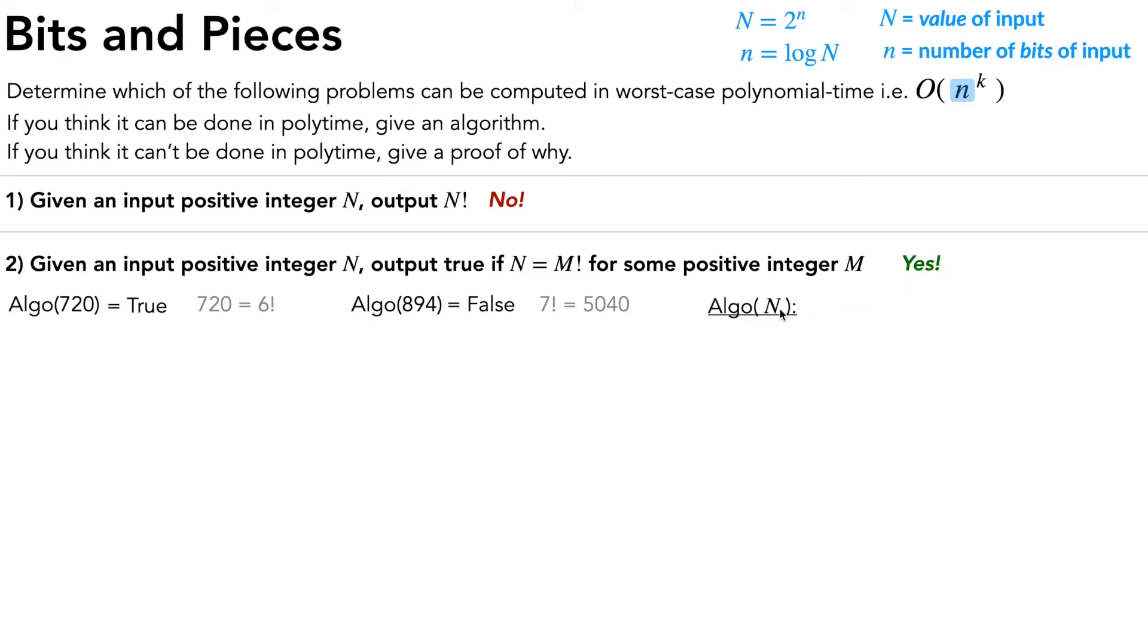So this algorithm takes in N as input. It sets two variables, M and x equal to 1. While x is less than N, we're going to increment M by 1, multiply x by M. And after we're done running this loop at the very end, if x is equal to N, we return true, and otherwise we return false. So let's step through the examples using this algorithm so we can see how it works.